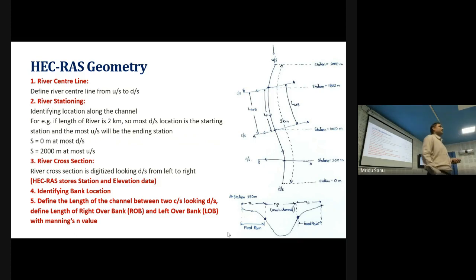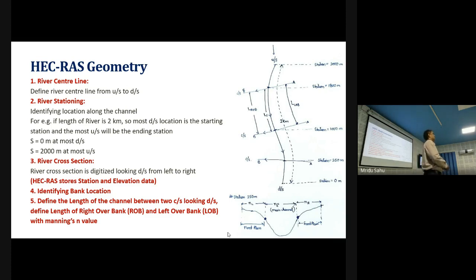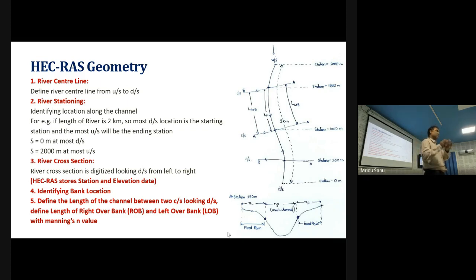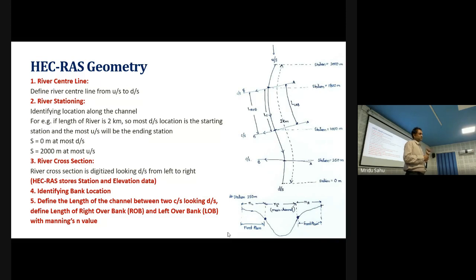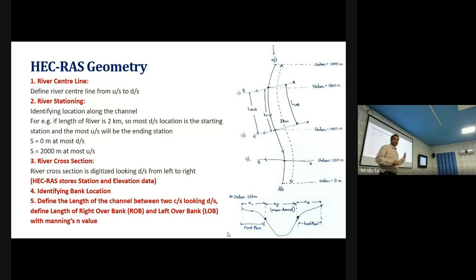In HEC-RAS, the first and most important thing is geometry. You define the channel geometry — shape, size, and length — since flow is already available from your hydrologic model. For geometry, you first define the center line of the river, drawn from upstream to downstream. For example, analyzing the Kharung river's impact on Raipur city, you choose a specific stretch of the river known as a 'reach.'